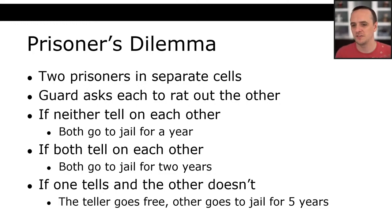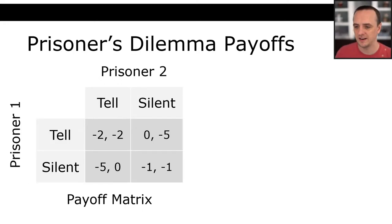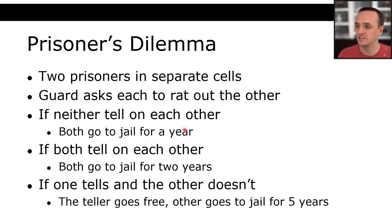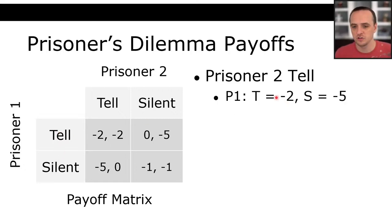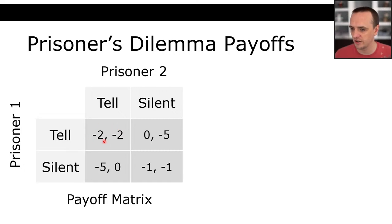This payoff matrix assumes someone who values money linearly and doesn't care about the other person. The direct translation from real-life prizes into your payoff matrix can be very difficult. My favorite episode of Split or Steal features a guy who walks on — apparently an engineer who knows the Prisoner's Dilemma — and immediately tells the other contestant: 'Whatever you're about to say, I don't care. I'm going to choose Steal.'